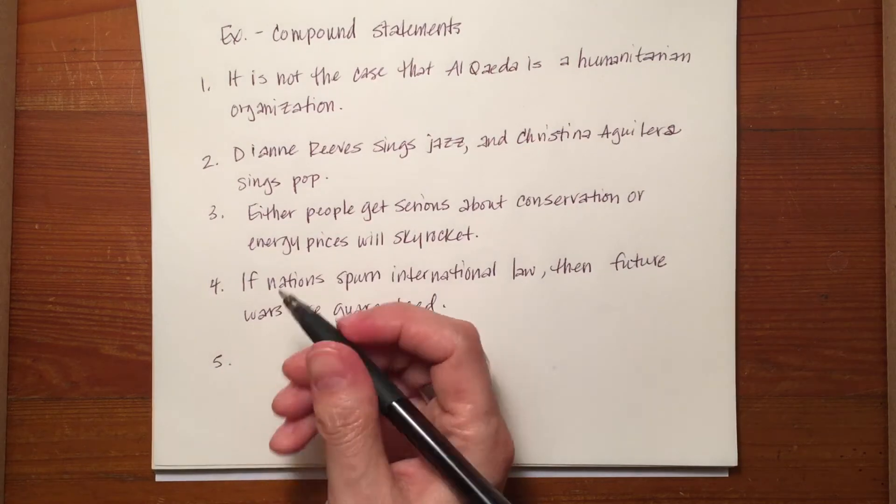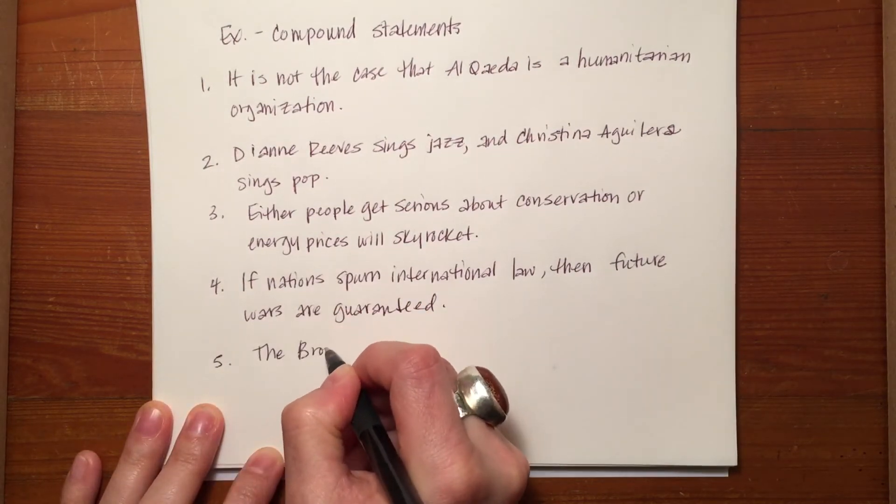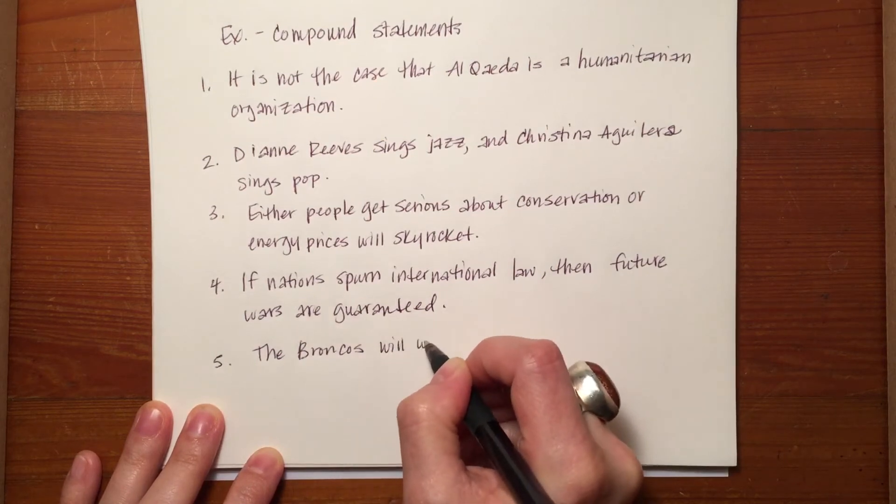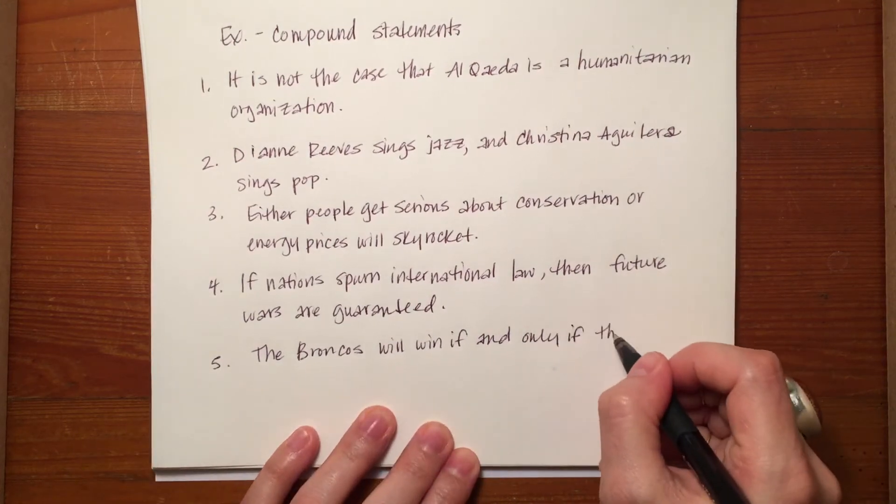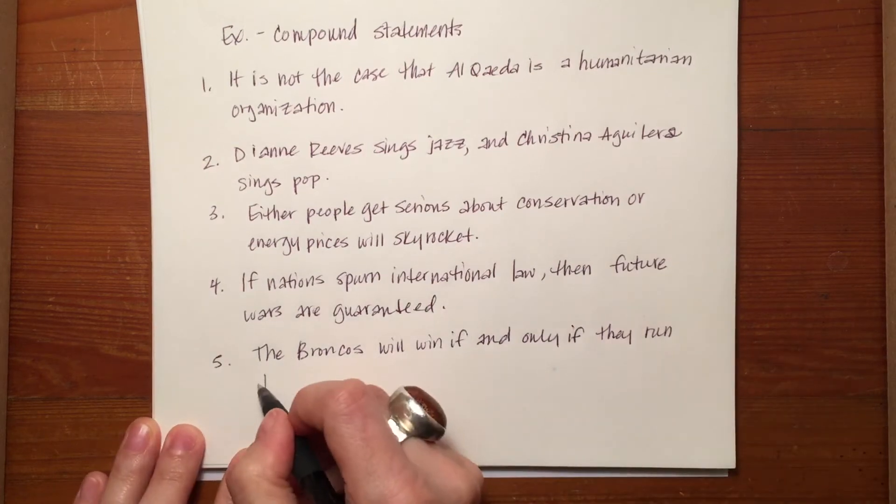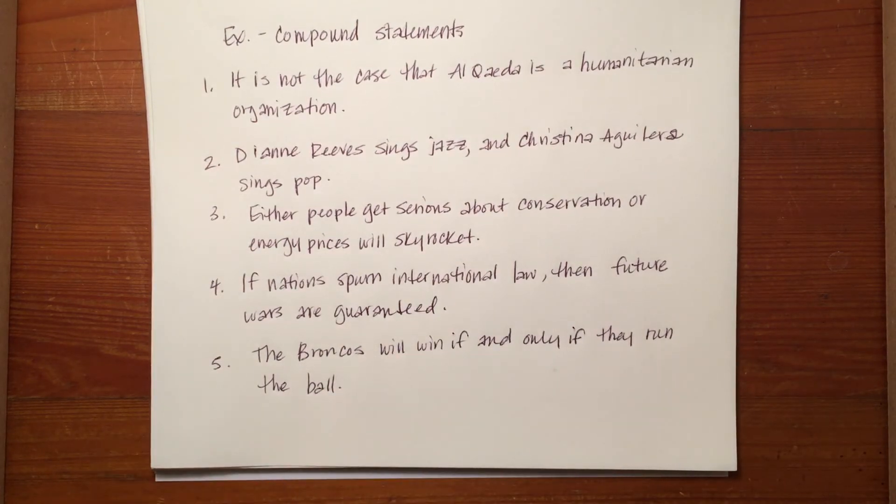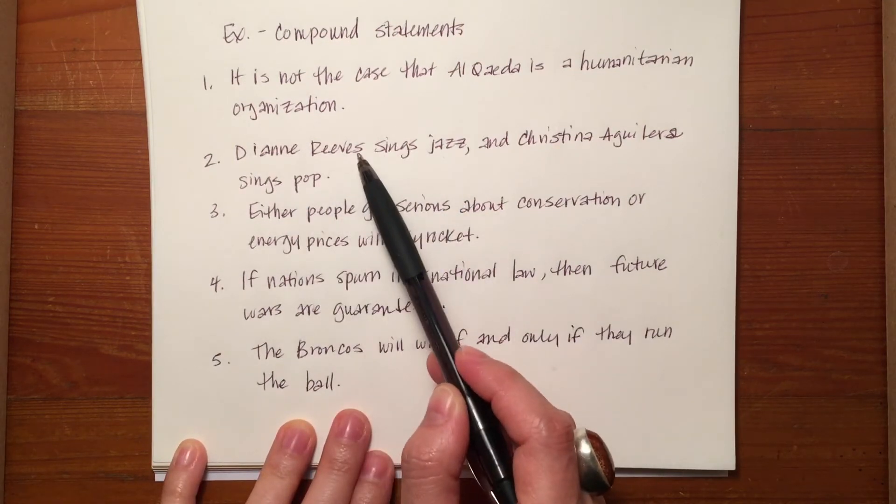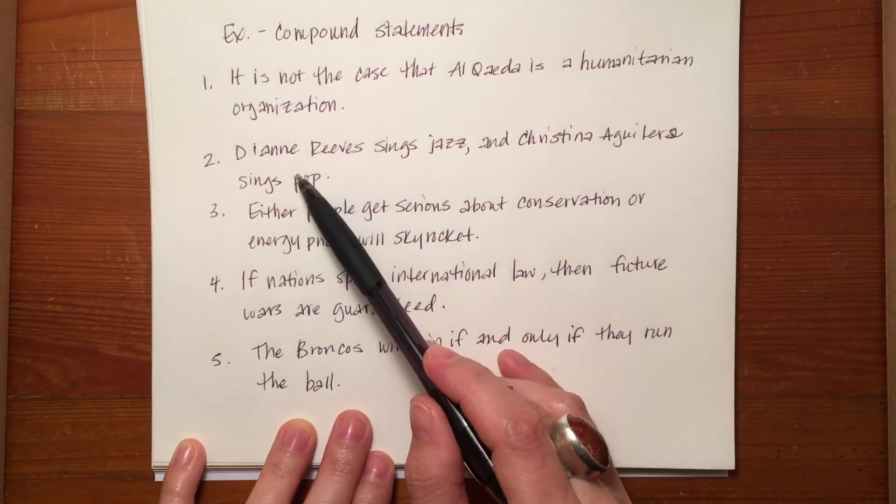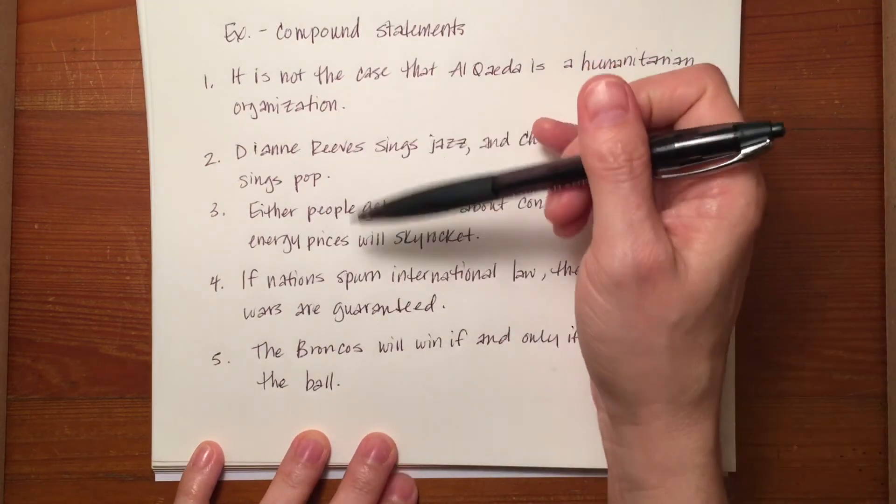And then the fifth and last one, the Broncos will win if and only if they run the ball. So as you can see, each one of these statements has two components or two statements within it. In the first case, we say it is not the case and then Al-Qaeda is a humanitarian organization. Those are two separate statements. In the second one, Diane Reeves sings jazz is one statement and Christina Aguilera sings pop is the second statement. So this is a compound statement when we put them together and so on and so forth.